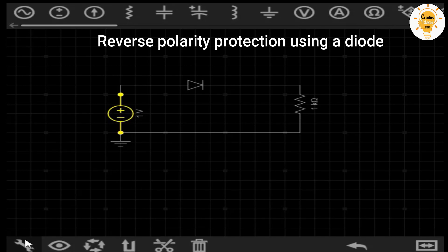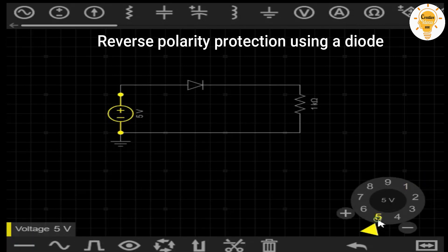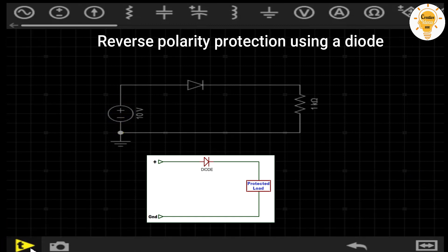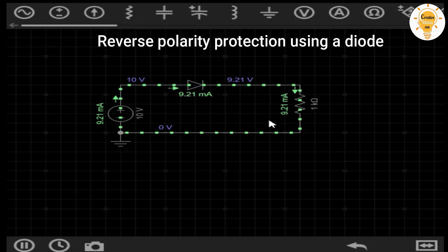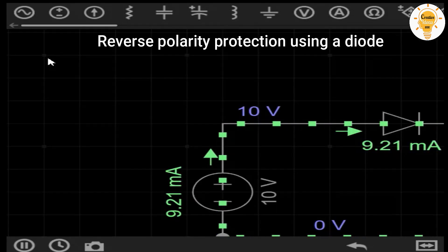The use of Schottky diodes is recommended since the voltage drop in these is less. This will also cause less heat to be generated in them. If we connect the power supply correctly, the current will circulate and our circuit will work normally.